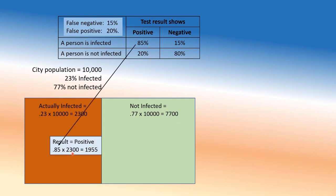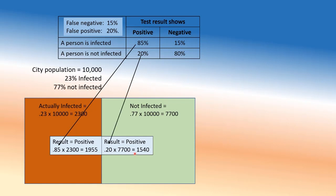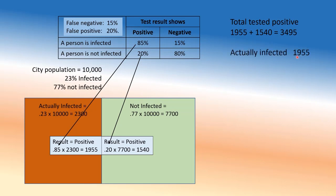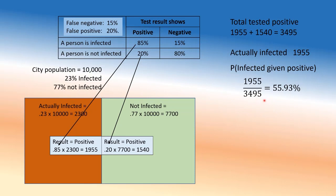85% of the 2,300 infected will test positive — that's the correct result: 1,955 people. And 20% of the 7,700 not infected will test positive — that's the wrong result: 1,540 people. So in this town, about 3,495 people will test positive — roughly 35% — but not everybody is actually infected.